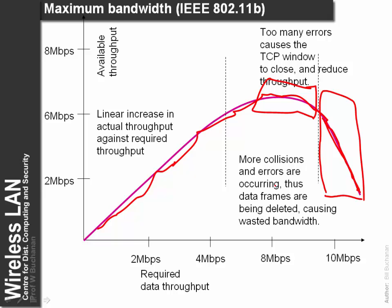As the required data rate increases, the actual throughput increases. Unfortunately, as we start to approach saturation there are many more collisions of data frames and errors. The TCP algorithm does not cope well with these errors and assumes there are problems on the line, backing off the TCP window. This means data packets sent require acknowledgements, and we actually get a reduction in data rate as we reach saturation.